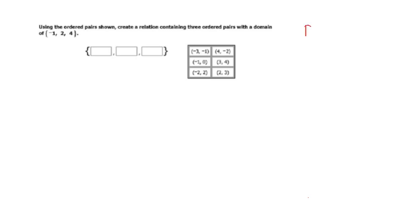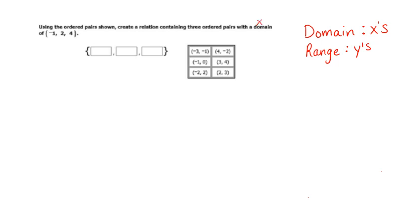The first part we're going to talk about is domain and range. Domain is your set of x's and range is your set of y's. Sometimes we call the x's the input and the range the output. Using the ordered pairs shown, create a relation containing three ordered pairs with a domain of negative 1, 2, and 4.